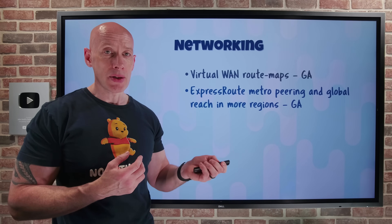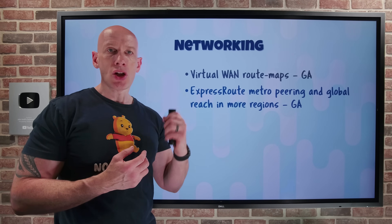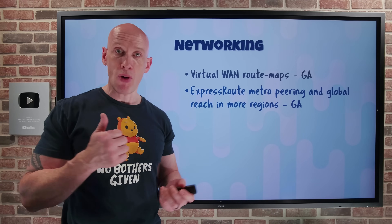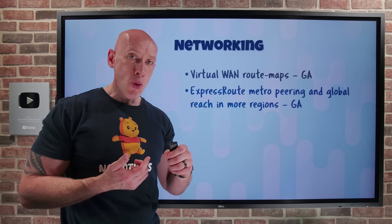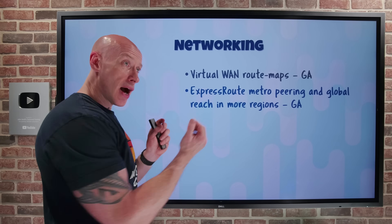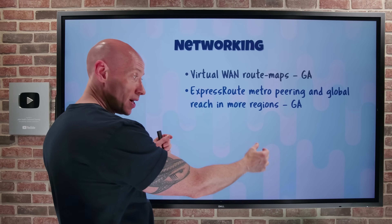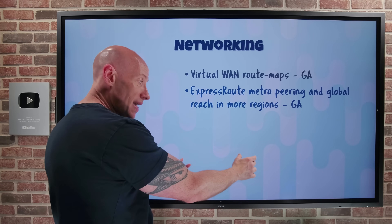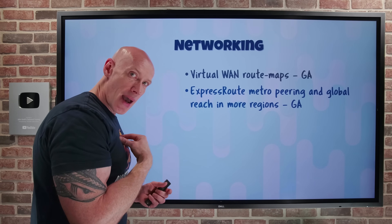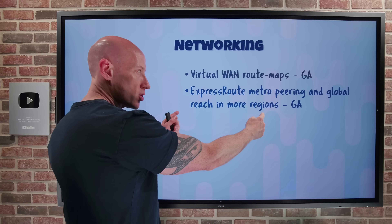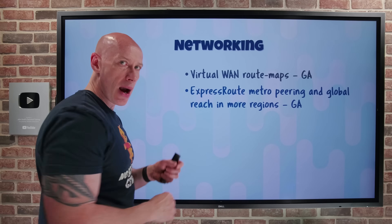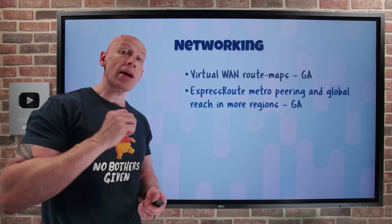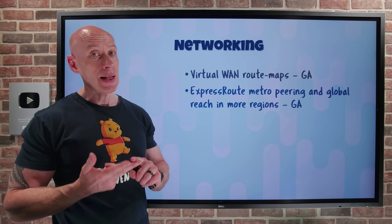New metro locations are now available: Atlanta, Jakarta, Madrid, and Milan. There are also new regular peering locations in Brussels and Brussels 2. For ExpressRoute Global Reach — which lets two data centers with separate ExpressRoute circuits talk to each other privately over the Microsoft Backbone Network — that capability is now also available in Belgium, Italy, and Spain.